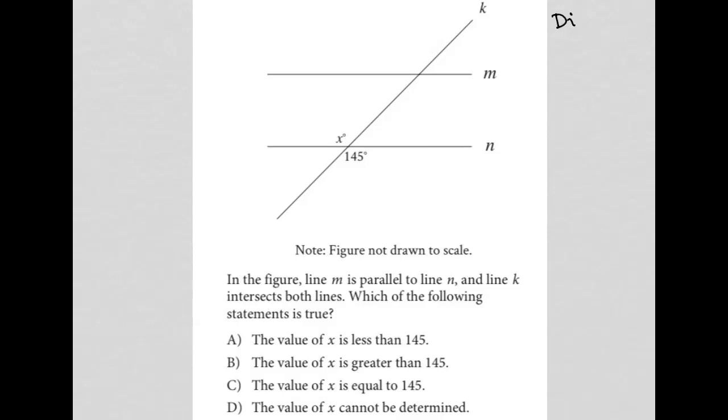So this question is a diagram question. It looks like we have two parallel lines with a transversal. I have to confirm that, of course. But for sure, this 145-degree angle that's been provided is a vertical angle to this x-degree angle here, which means x must be equal to 145.